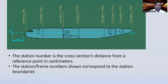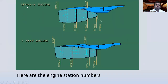The datum zero starts 254 centimeters forward from the aircraft nose. The station and frame numbers shown correspond to the station boundaries. For the CFM56-5 engine and V2500 engine, here are the engine station numbers: station 297, station 684, station 719, station 800, station 313, station 388 — you can go through the picture for the full reference.